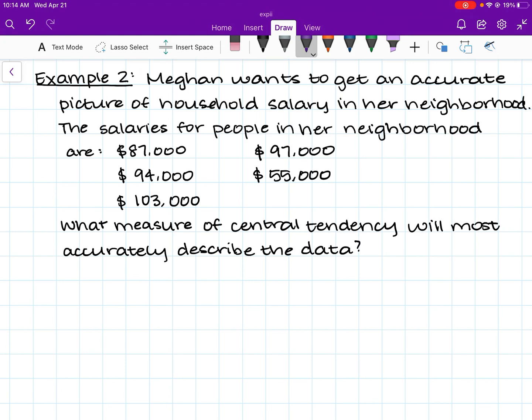So we see when we're looking at this data set right here of the salaries, we see that for the most part, they're pretty similar, but there's an outlier right here. I'm actually going to do the outlier in a different color. This is an outlier. Outliers are points of data that are away from the rest of the data. So they cause the data to spread a lot. You can see 87, 94, 103, and 97 are relatively close to each other. But then we have this number, 55,000, that is so far away from everything else. So this is an outlier.